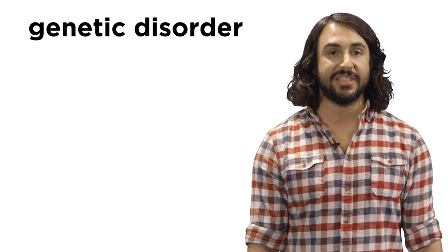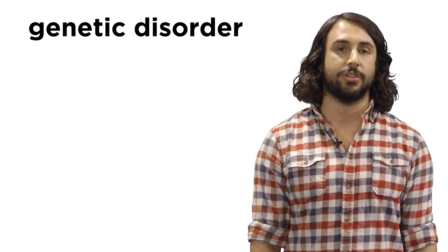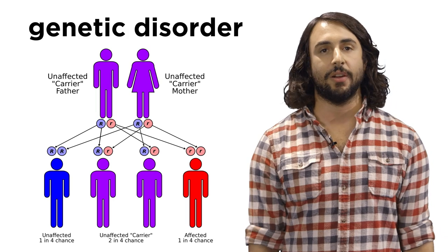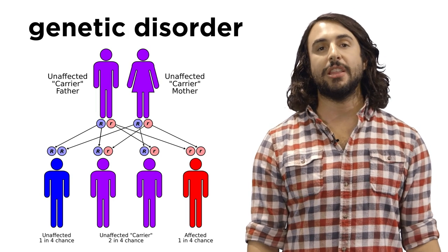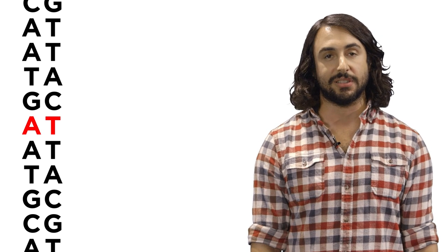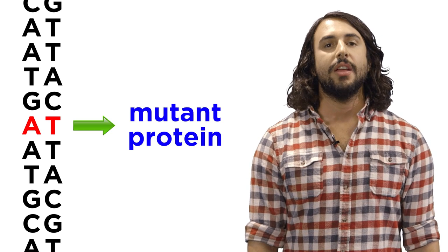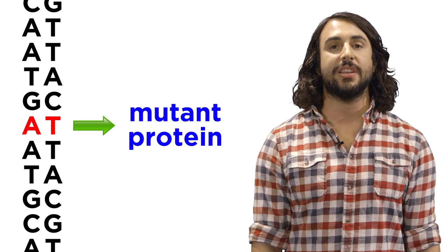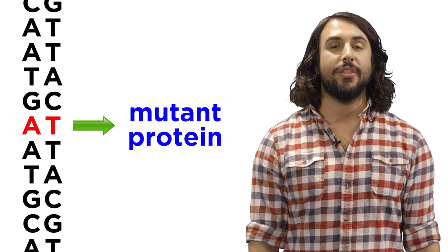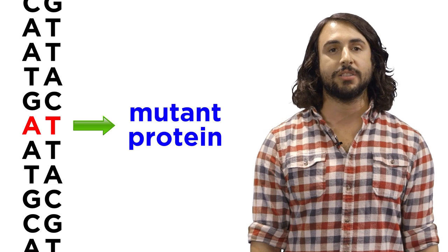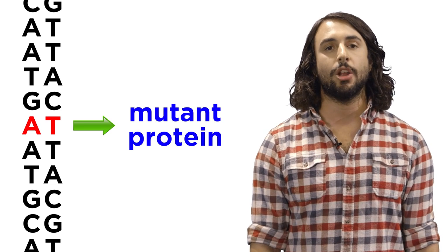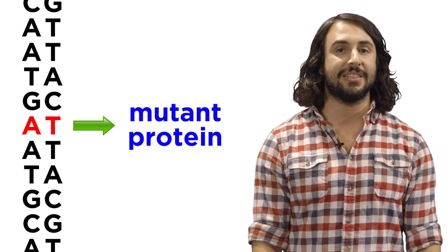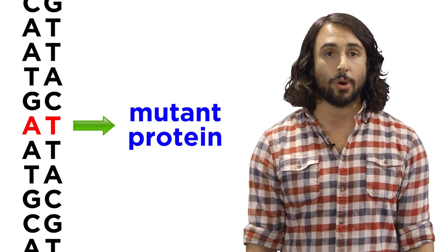One category of disease is genetic disorder. These can be hereditary, passed down from parent to offspring, or they can be the result of a mutation sustained during a person's lifetime. These will always involve some change to DNA that affects the product of gene expression, resulting in a protein with behavior that deviates from what is normal.